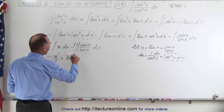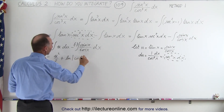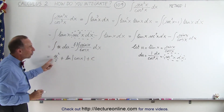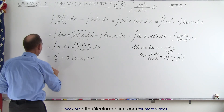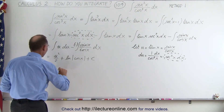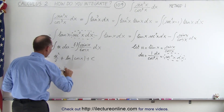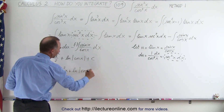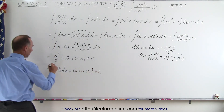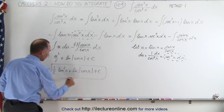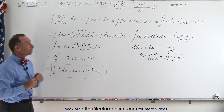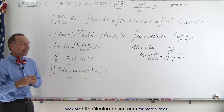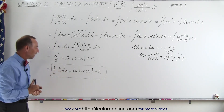That becomes the natural log of the cosine of x plus a constant of integration. Since u was equal to tangent of x, the full result becomes one-half times tangent squared of x plus the natural log of the cosine of x plus a constant of integration. That is our first answer for this particular integral, and it's a valid answer that will give you the correct result when you plug in values for x.